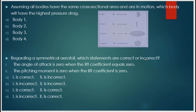Next question: assuming all bodies have the same cross-section area and are in motion, which body will have the highest pressure drag? The answer is body 2. Pressure drag depends on velocity — higher velocity means higher pressure drag — and it depends on frontal area — greater frontal area means greater pressure drag. Body 2 has the greatest frontal area.